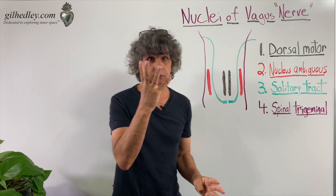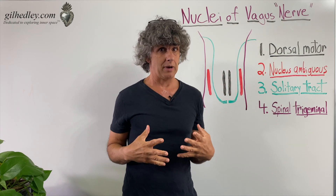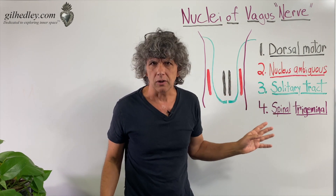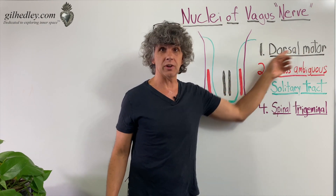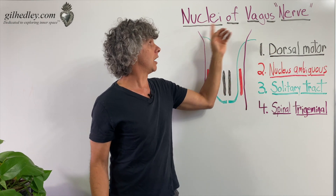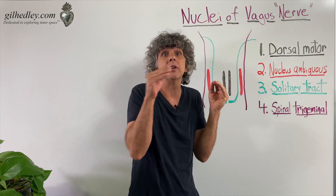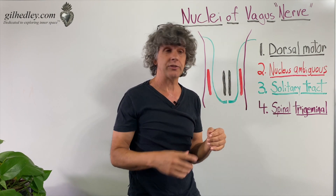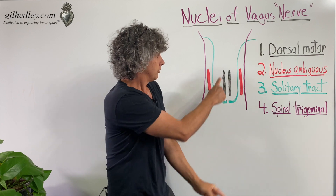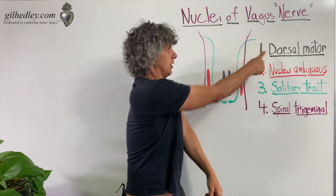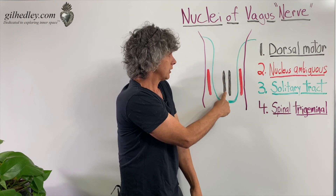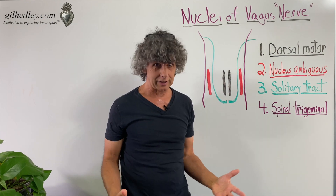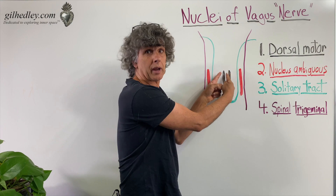So there are four of them identified by anatomists. The dorsal motor nucleus of the vagus nerve sends fibers that stimulate motor activity at a distance from here in the medulla oblongata. I've color-coded them, so here's our dorsal motor vagal nucleus, and they're paired.